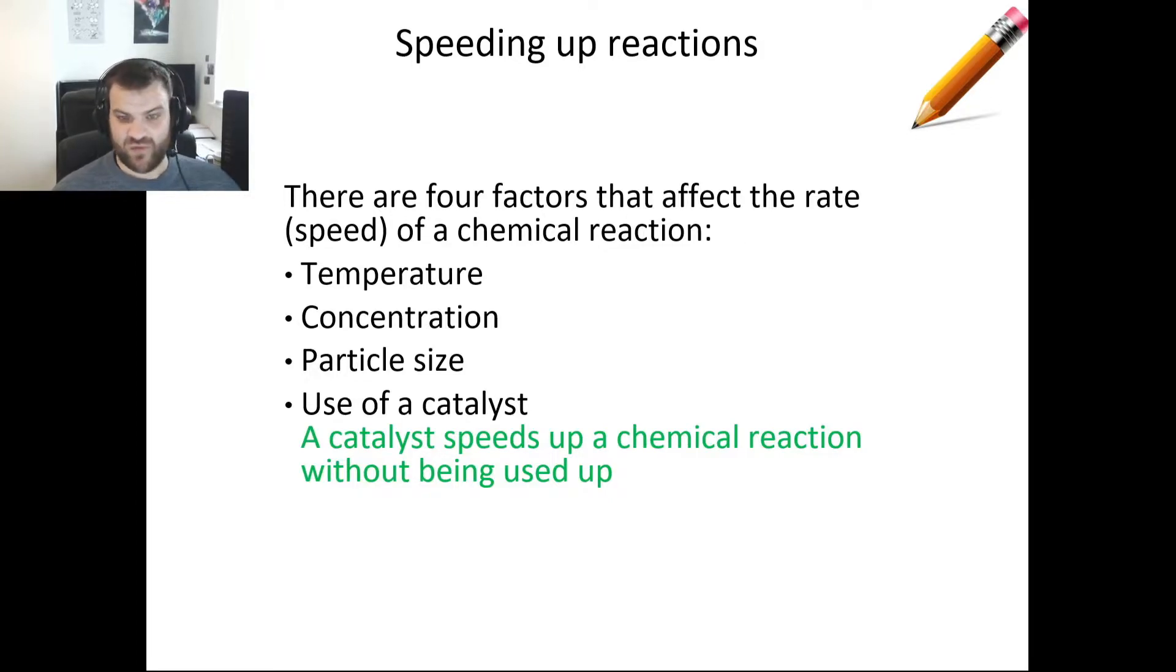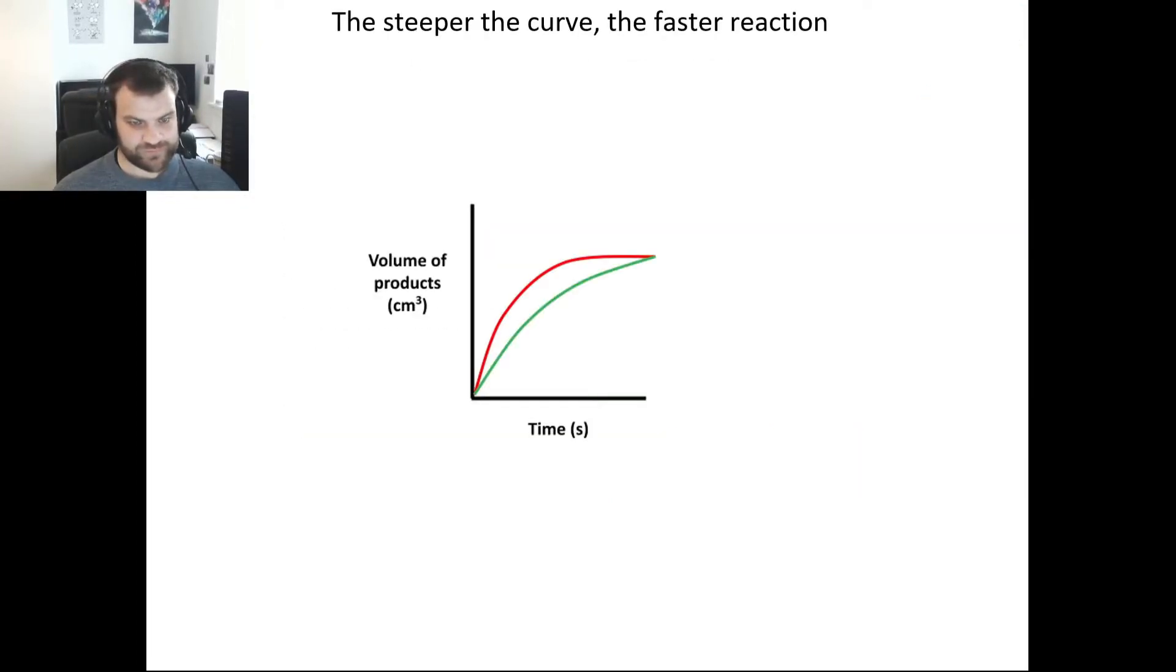We could be given two graphs and asked to predict or suggest how we have produced different graphs in our experiment. The top one has a steeper curve, therefore it's the faster reaction. This could be because of higher temperature, higher concentration, or using smaller pieces so lower particle size.